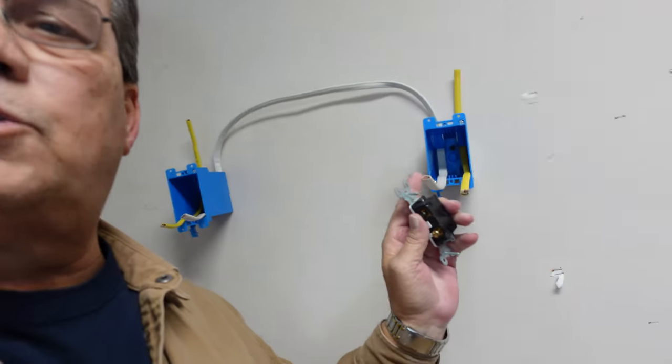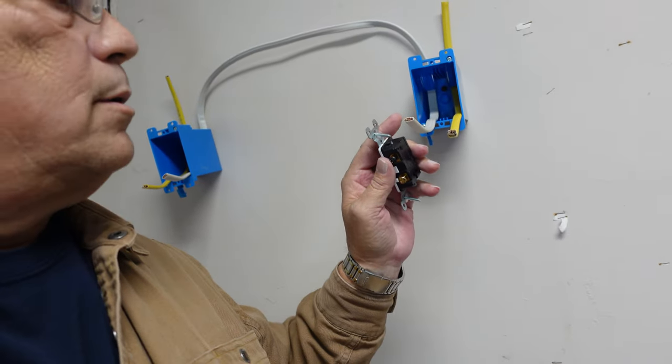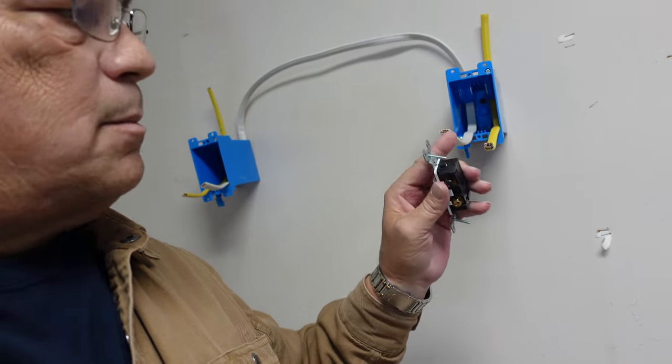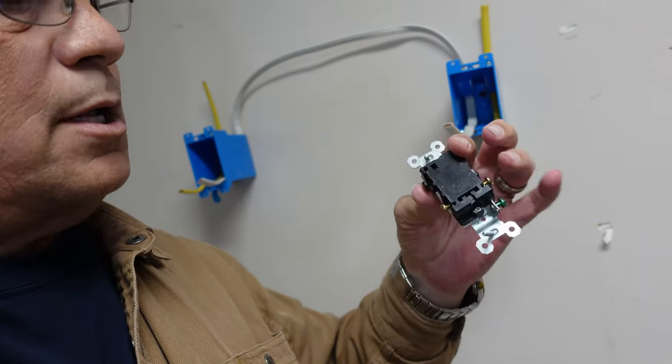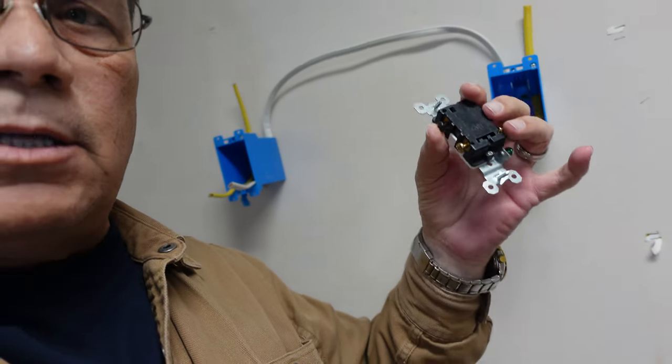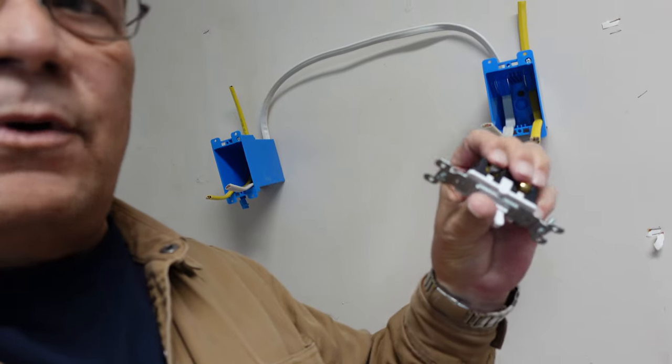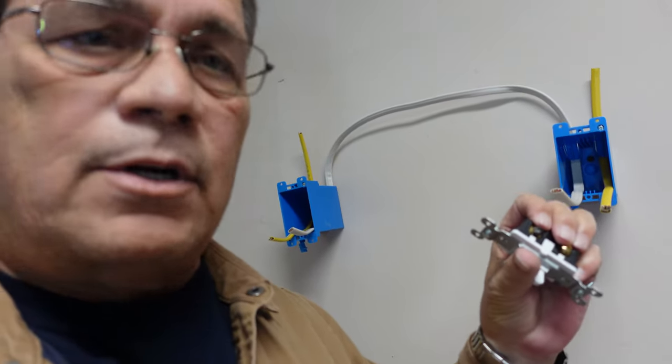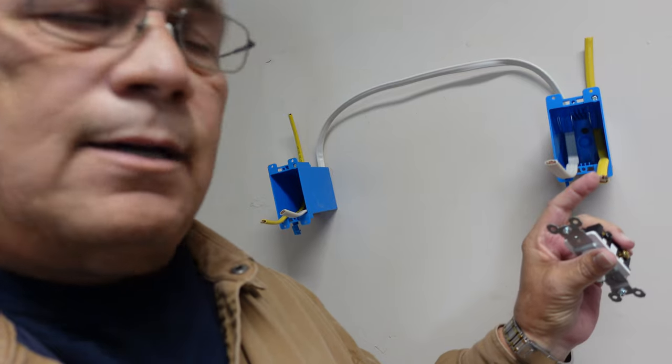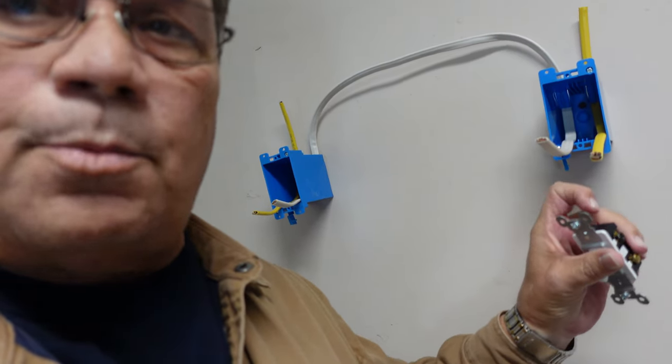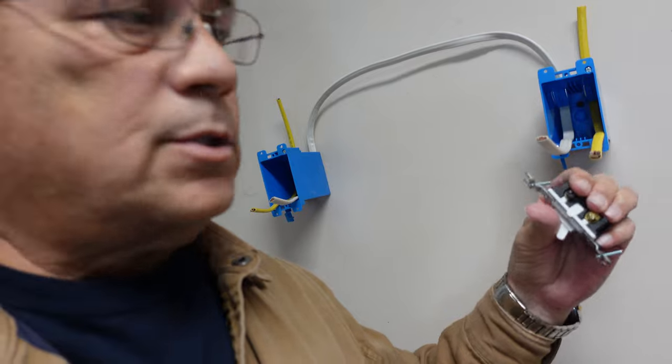Now when you are hooking your switch to the travel legs, it doesn't matter black or red what goes on the brass, as long as you're putting travel legs on them. You do however need to, it does matter however, the hot leg going to your light fixture or from your breaker. It matters that the black leg goes to your common. I hope I'm making sense to you here.